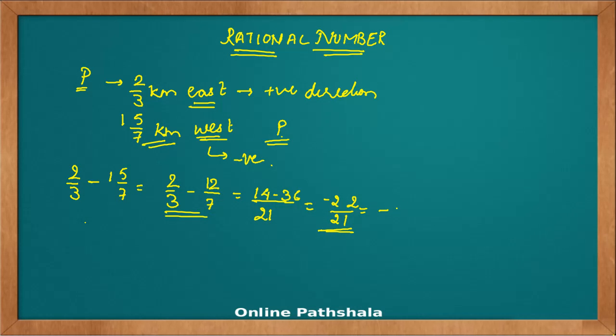This gives me -22/21 or -1 1/21 kilometers. Now as this is minus, I will say this is 1 1/21 kilometers in west from P, because my negative direction is the west direction.